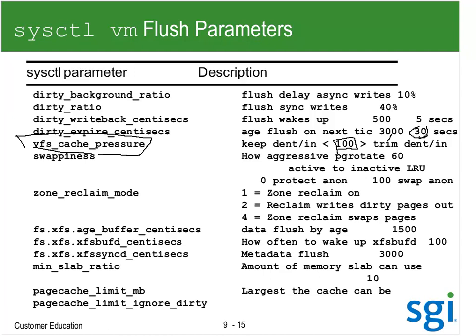If I drop VFS cache pressure below 100, I'm going to protect my slab and trim my cache. In your case I probably would not do that because most of your slab is the cache. If you trim the cache, that buffer_head should get smaller. If it's greater than 100, that says trim the slab and protect the cache. So this thing is deciding which is more important, the slab or the cache. Swappiness is determining which is more important, the process or the cache.